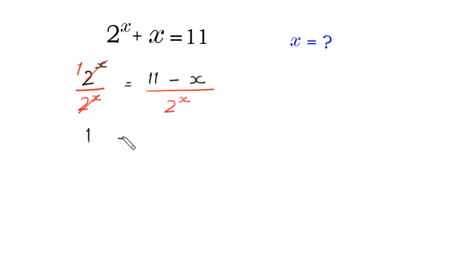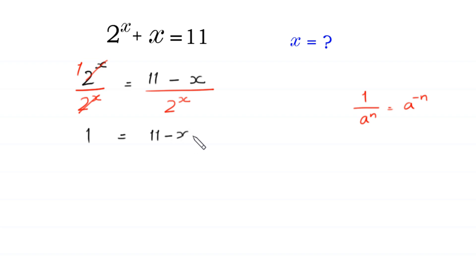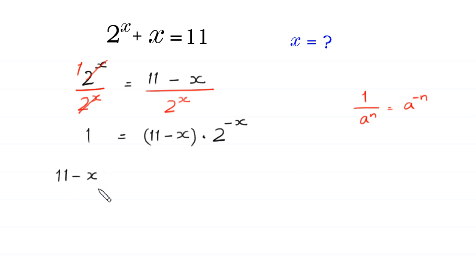So, 1 is equal to — according to this property of exponents, 1 over a to the power n is equal to a to the power negative n — we can write this 11 minus x over 2 to the power x as 11 minus x times 2 to the power negative x. Now we write this 11 minus x times 2 to the power negative x at the left side and this 1 at the right side. Like this: 11 minus x times 2 to the power negative x is equal to 1.